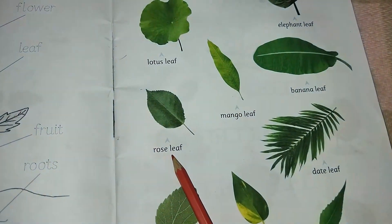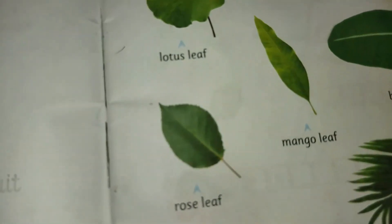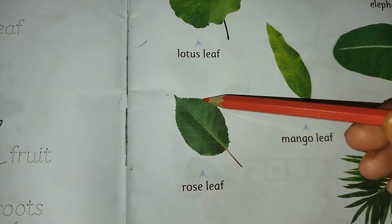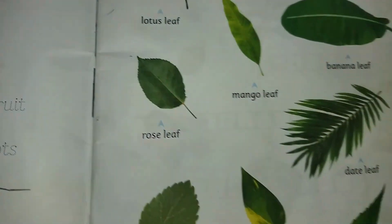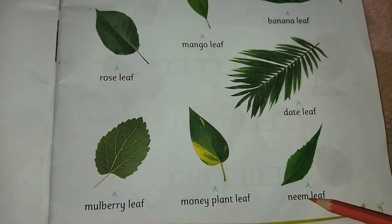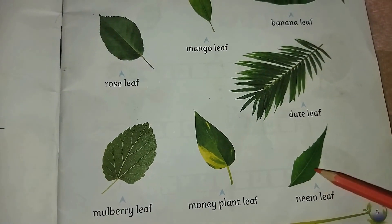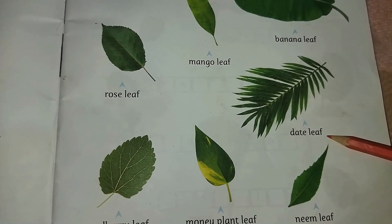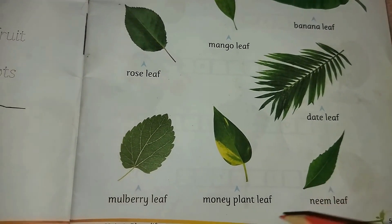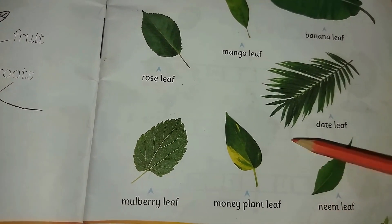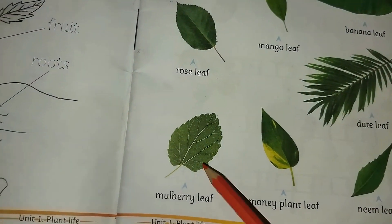Here is the rose leaf. Rose has sharp and zigzag edges. Here is the dates tree leaf. These are neem leaves. Neem leaves are also zigzag and long, like an almond shape. This is the money plant leaf — it is smooth and shiny.